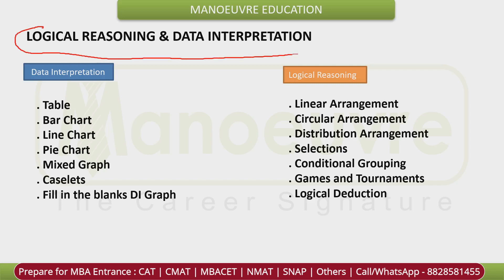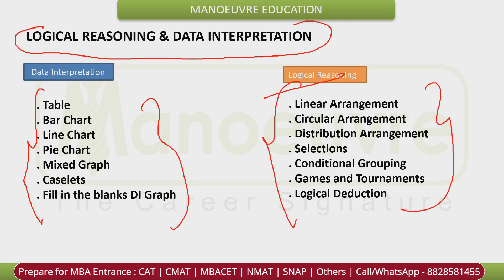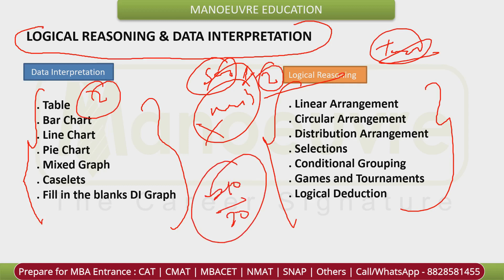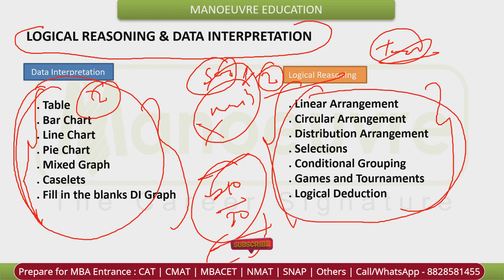The toughest section of CAT is LRDI — you have to prepare this topic well. In this section the cutoff score is not high; maximizing your score here is key. There are two sets of DI and two sets of LR. If you get 10 out of 20 correct, you will likely get 99.99 percentile in this section. The cutoff for Verbal and Quant is minimum 85 to 90 percentile. LRDI is a time-consuming section.